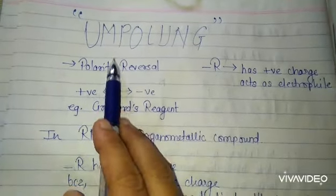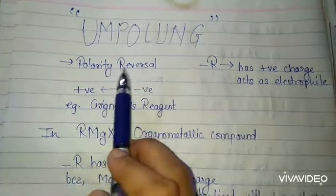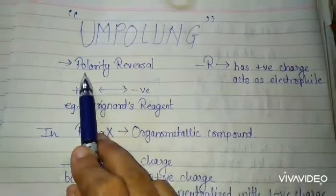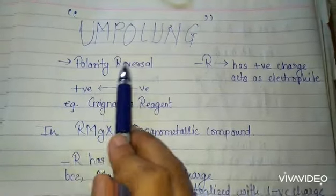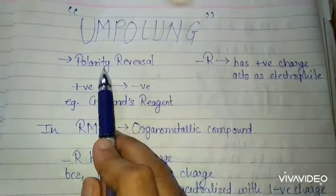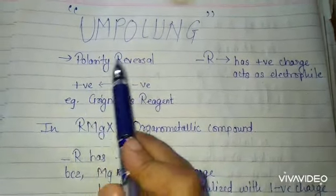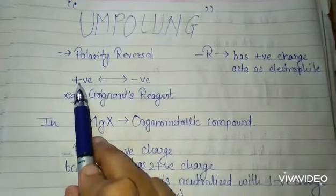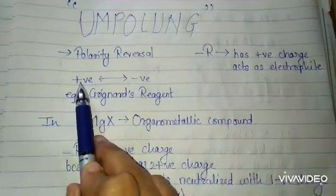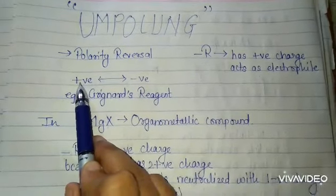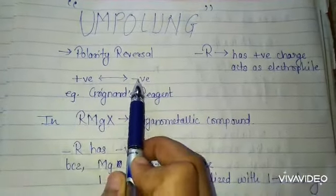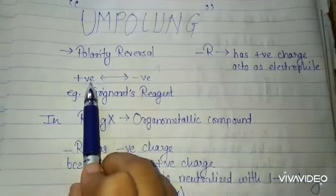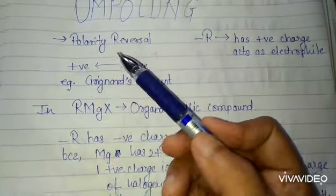Umpolang is nothing but the polarity reversal. Polarity reversal means the reversal of the charges. It means sometimes the positive charge gets converted to negative and negative gets converted to positive, but how?